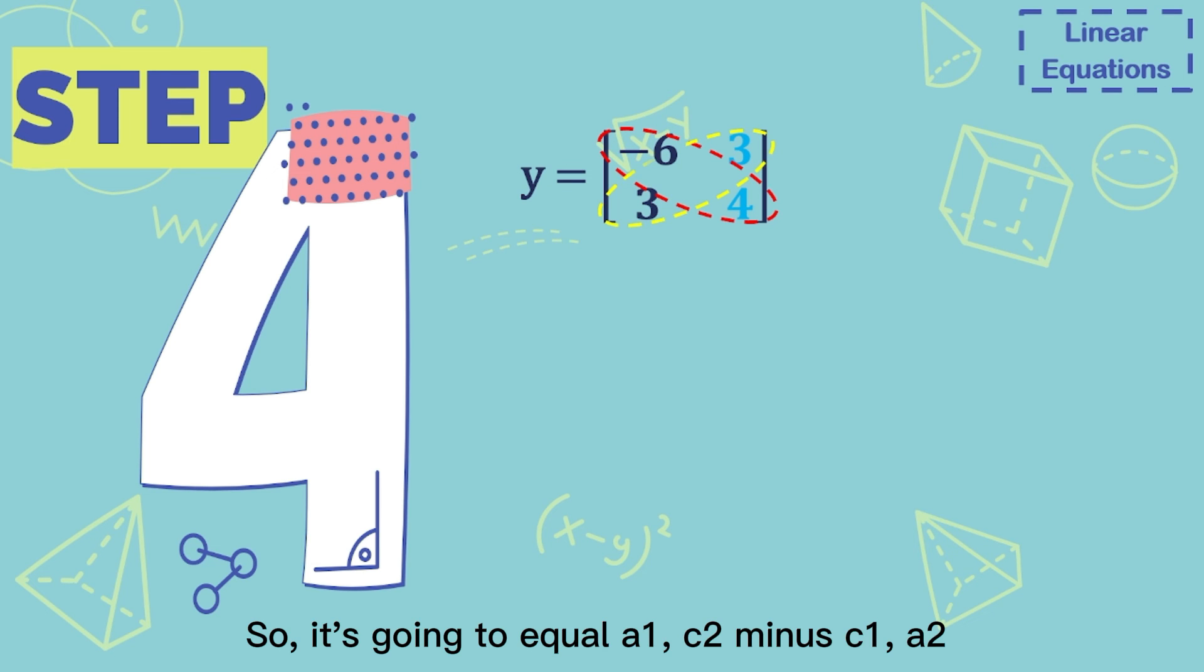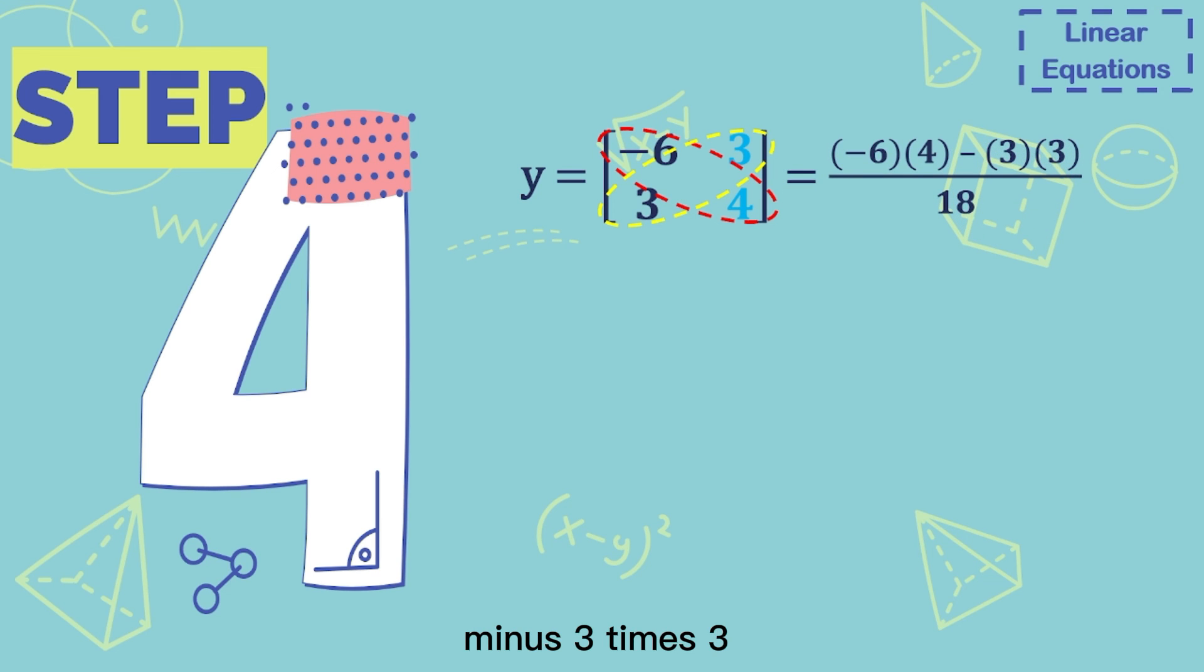So it's going to equal a1 times c2 minus c1 times a2, that determinant of the matrix. Now, -6 times 4 minus 3 times 3 divided by 18. After that, -33 divided by 18, and the final answer is -11 over 6.